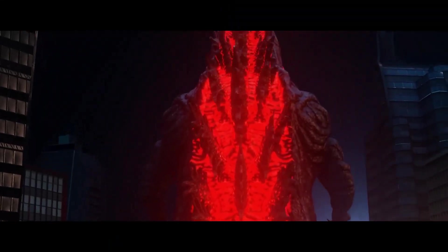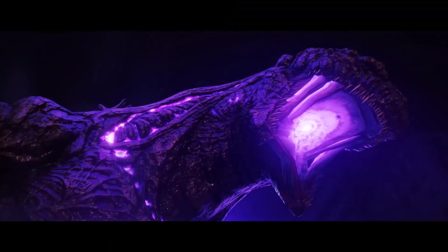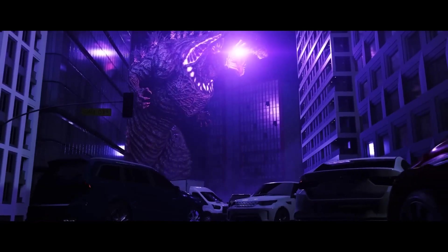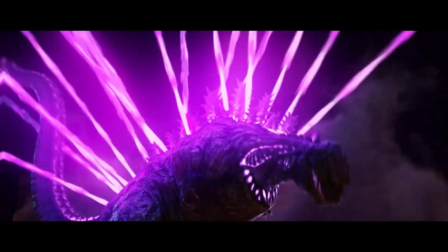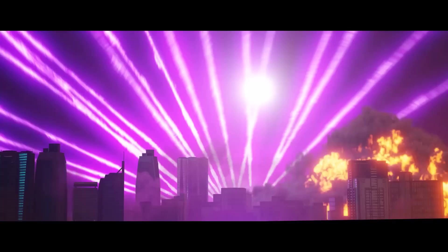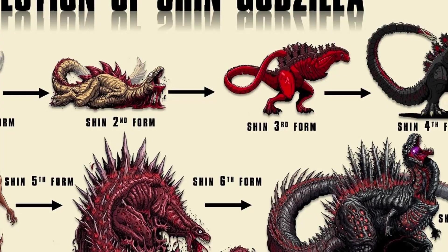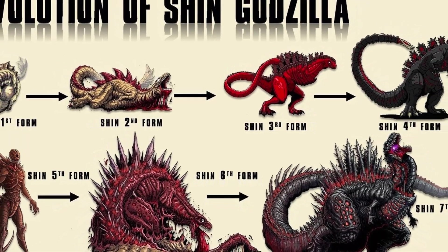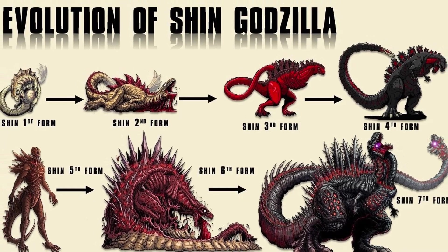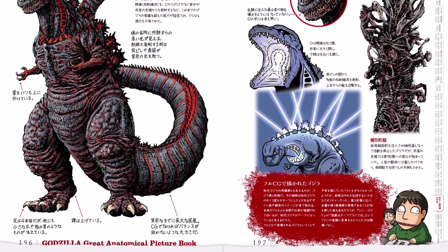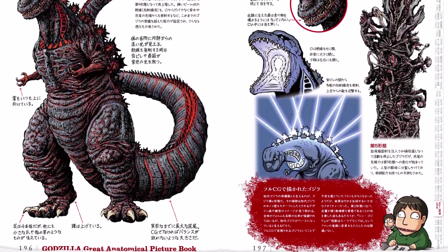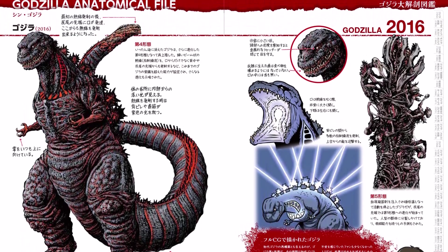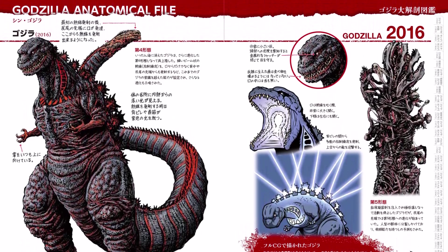In this video we will analyze the anatomy and biology of Shin Godzilla, the version seen in the 2016 movie of the same name made by Toho. We will discuss all the organ systems and their evolution across all four forms, including the cellular makeup, digestive system, respiratory and nuclear system, just to name a few.